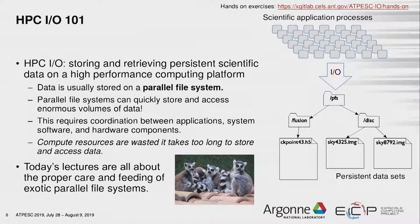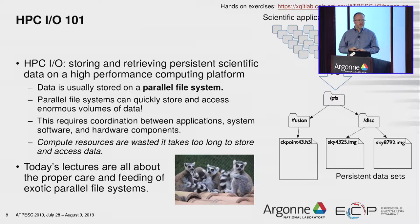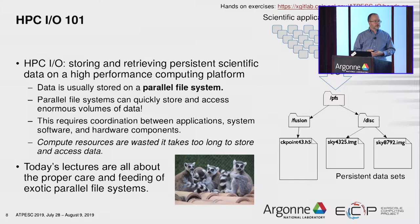HPC I/O is all about storing and retrieving scientific data on a high performance computing platform. What this always revolves around is a parallel file system — like any other file system, but optimized for quickly storing and accessing enormous volumes of data: gigabytes, terabytes, petabytes. To make these things work well, we have to coordinate a lot of different hardware components, system software, and applications. If we do a bad job of this, you're not going to make good use of your core hours. If you have a thousand nodes and they spend 30 seconds waiting on data, that's 30,000 seconds of lost productivity.